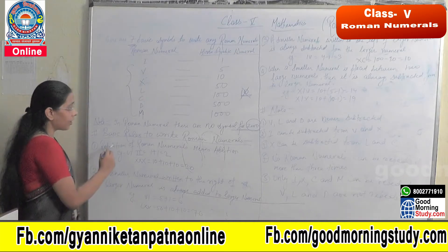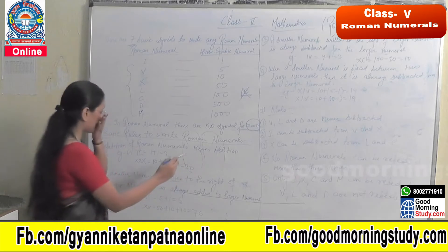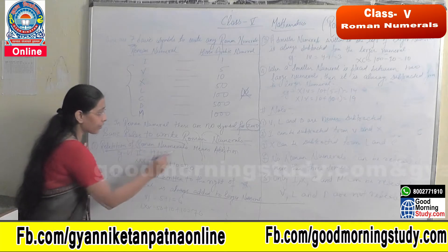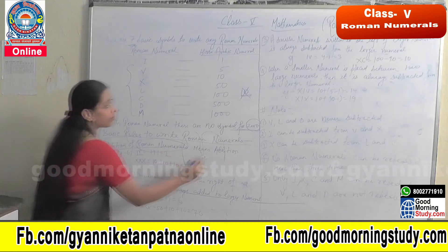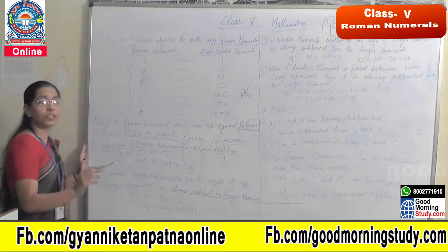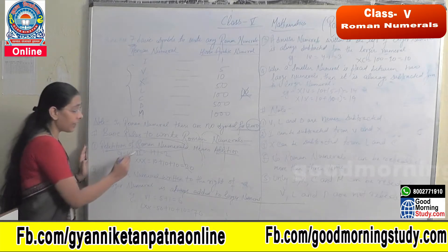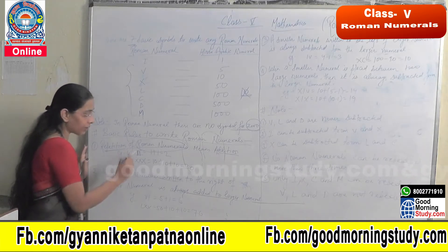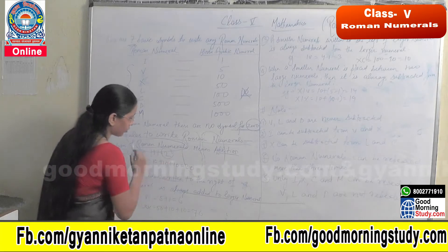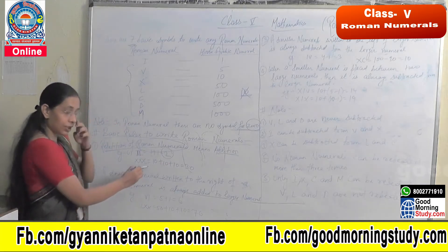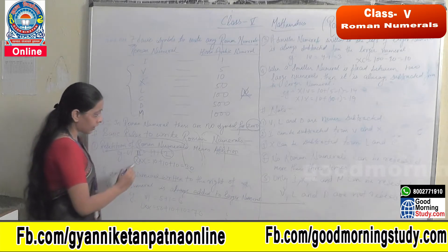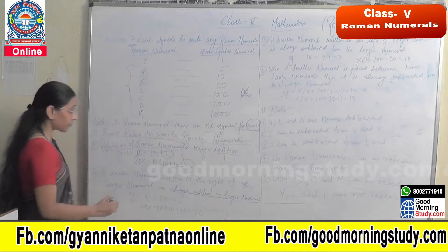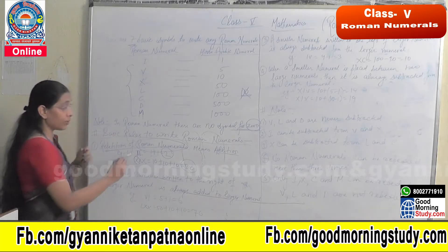The first basic rule is: repetition of Roman numerals means addition. If any Roman numeral is repeated, we simply add it. For example, II — I is repeated twice, so 1 plus 1 equals 2. XXX — X is repeated 3 times, and X stands for 10, so 10 plus 10 plus 10 equals 30.